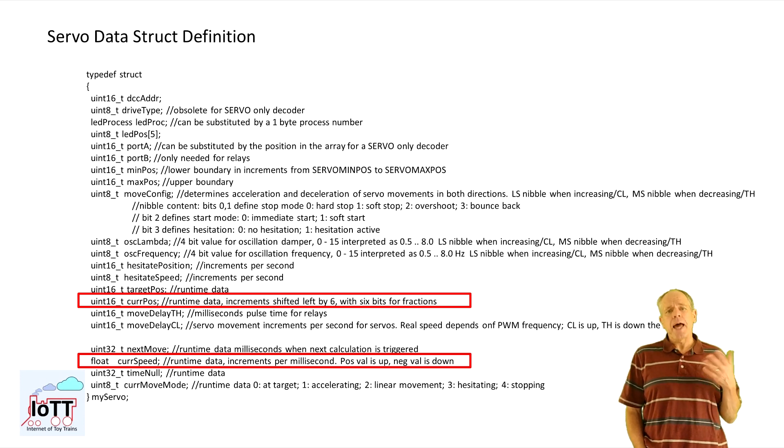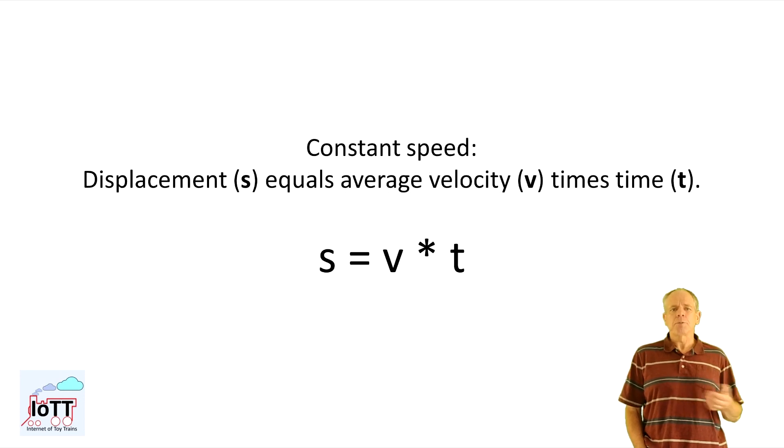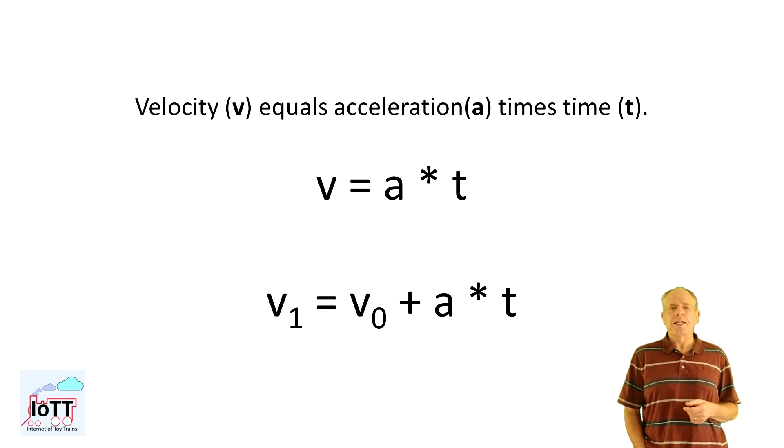The way to do that is adding a variable for the current position and a velocity vector variable that keeps track of the current speed. With that, we can write a status machine function that is called, say, every 5 milliseconds. It calculates and sets the new position of the servo using the formula you know from your physics classes.